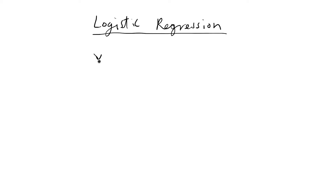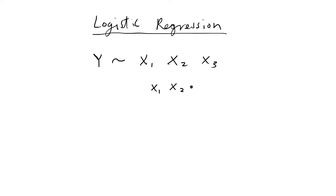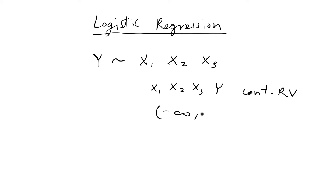I'm going to start by comparing it to a typical linear model, which would be multiple linear regression or simple linear regression. That's when you have a variable y, your outcome variable, and you regress y on one or more predictor variables — x1, x2, x3. In this type of linear model, x1, x2, x3, and y are all continuous random variables, meaning their values can exist anywhere from negative infinity to infinity.